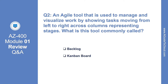A tool used to manage and visualize work by showing tasks moving from left to right across columns representing stages — what is this tool commonly called? The correct answer is Kanban board. A Kanban board lets you visualize the flow of work and constrain the amount of work in progress. Your Kanban board turns your backlog into an interactive signboard providing a visual flow of work.